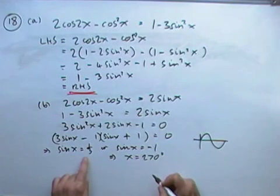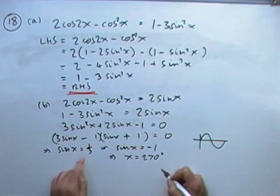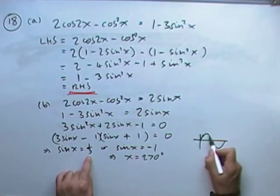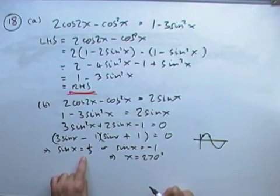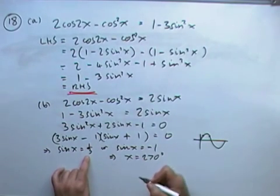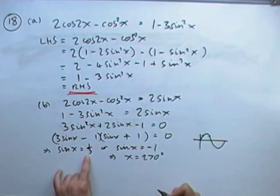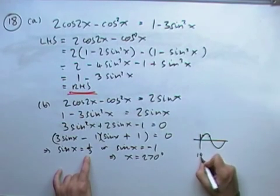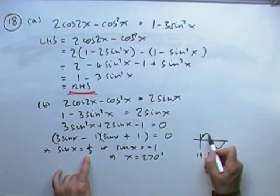For this part, though, x equals negative 1 third. Sorry, x equals 1 third. My two answers are going to be here. So I'll have to find where that part comes to. So the acute angle for that, when you put it into your calculator, is 19.5.